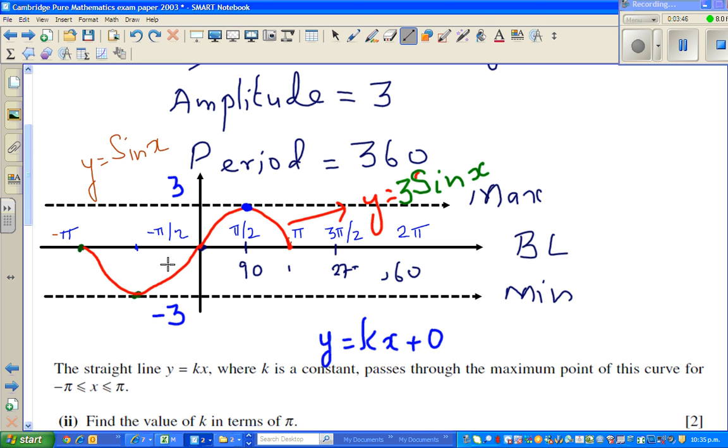So k is the gradient and 0 is the y-intercept. So I can say the line is passing through 0 and 3. This is the line. The question is, what's the gradient of this line? And you have to write k in terms of pi.